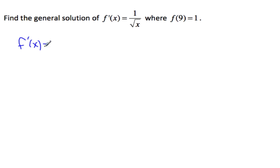First write f prime as x to the minus 1 half. That means f of x will be add 1 to the exponent, we'll get a half. And when that half comes down, I need to make sure that I end up with a 1.